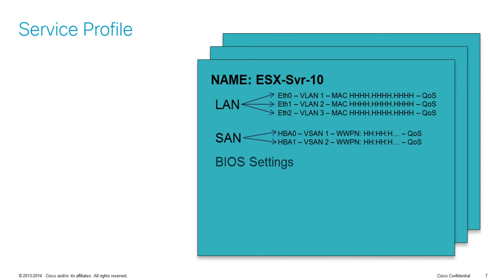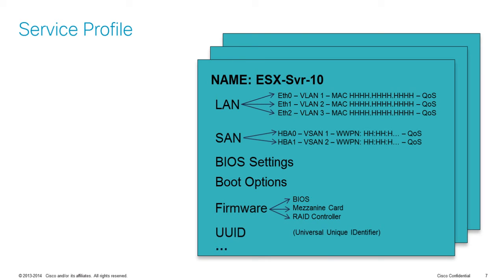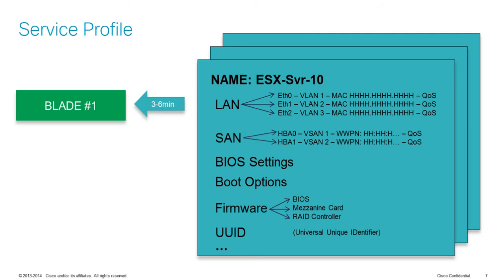A service profile can also contain BIOS settings, boot options, firmware, and UUID. In fact, we've identified more than 150 parameters that can be configured using a service profile. Normally you'd have to wait until you get the actual server to determine or configure those parameters. In Cisco UCS, you can do this without even having the server itself, so you can start working on your network deployment before the server arrives. When you have the physical server in, you associate this service profile with a blade — a process that takes roughly three to six minutes — and the server is ready to go. You just need to install whatever software you wish.